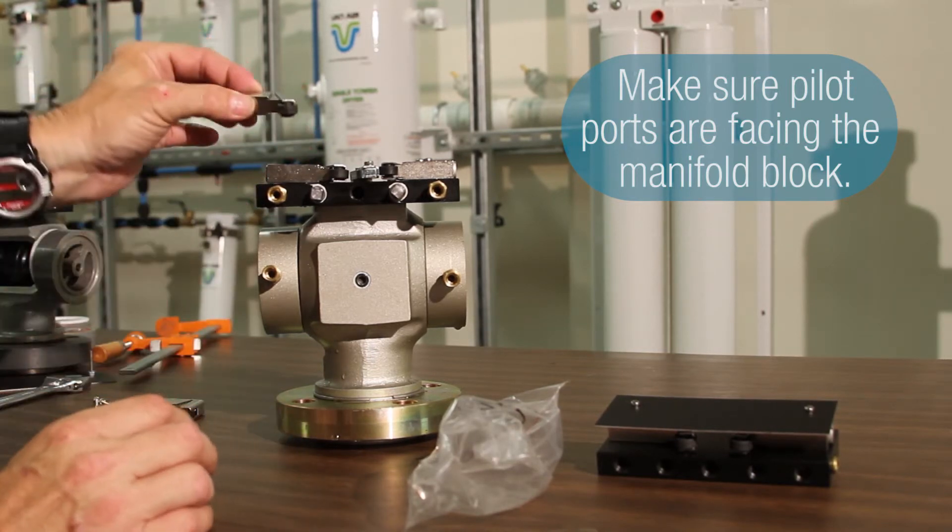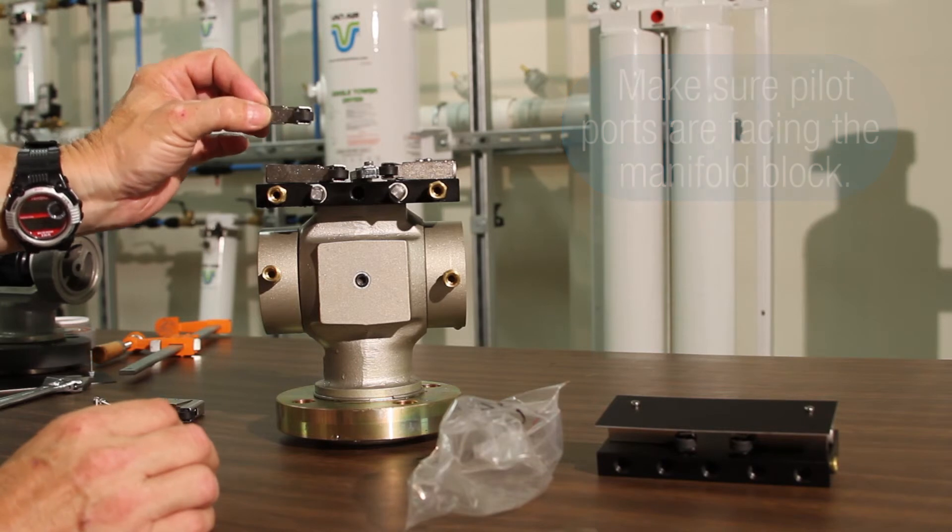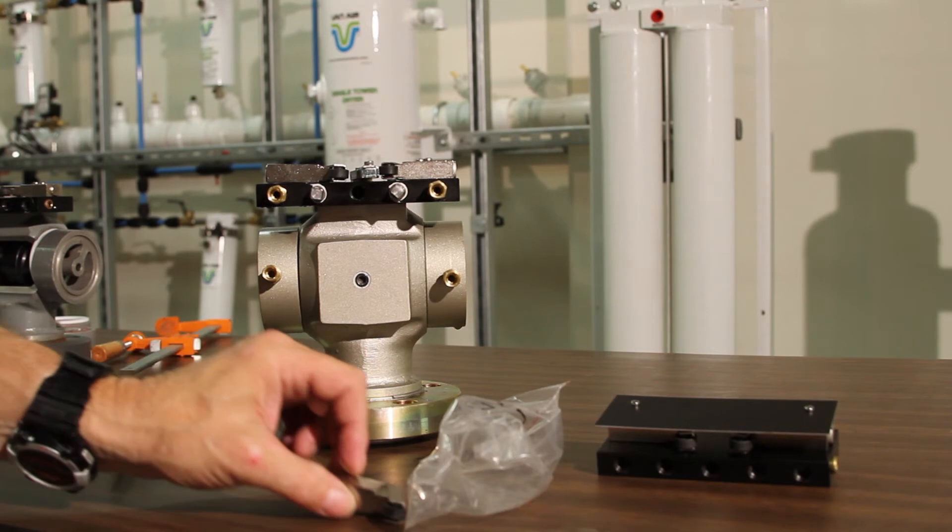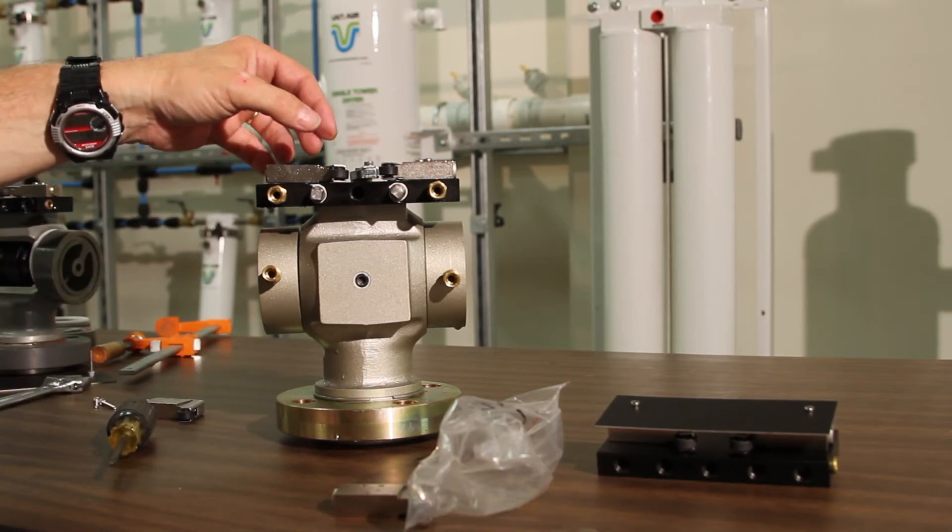If you put the other one on, it'll fit on there. They're exact opposite, but you'll see that the actual pilot ports for the limit switches are on the top side. It wouldn't activate properly.